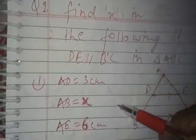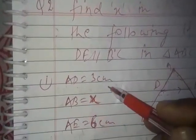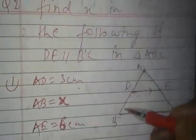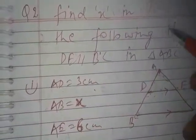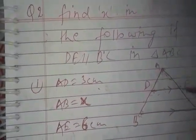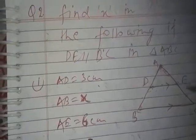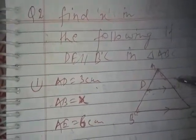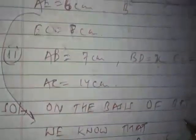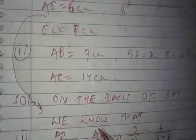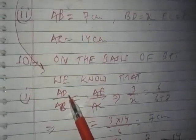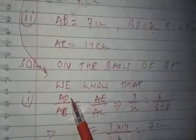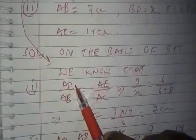In the first question, AD is equal to 3 cm and we have to find out the value of AB, the whole line segment. AE is the upper line segment and the lower line segment is also given. We will solve this using the corollary of BPT. As I told you earlier, a corollary is a statement which can be obtained on the basis of a given theorem.